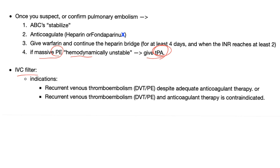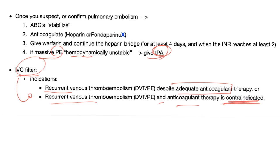What are the indications for the IVC filter? Recurrent venous thromboembolism despite adequate anticoagulation, or recurrent VTE where the patient has contraindications to anticoagulants. You cannot anticoagulate, so place the IVC filter. But for you to place the filter, the VTE must be recurrent. If this is the first time the patient gets a DVT or PE, do not talk about the IVC filter.